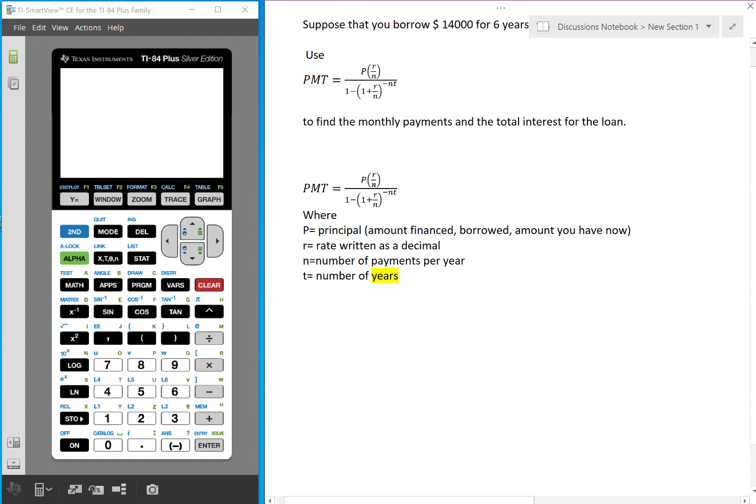N is the number of payments per year, so in our case because it says monthly payments we're going to use 12. If it says quarterly you use 4, semiannually you use 2, and T is the number of years. Be very careful it's time in years.